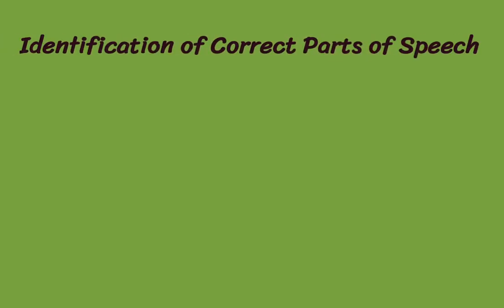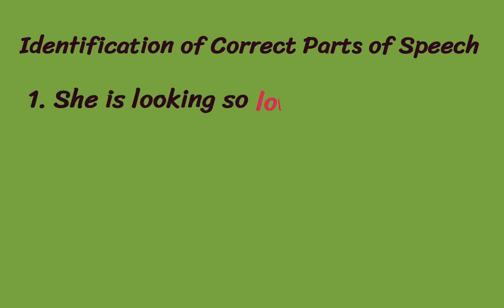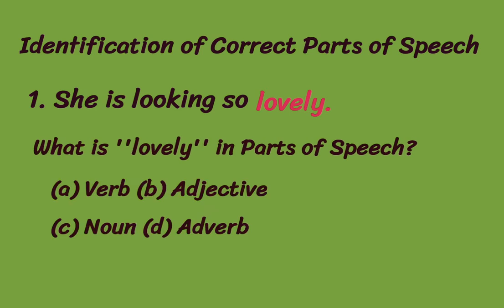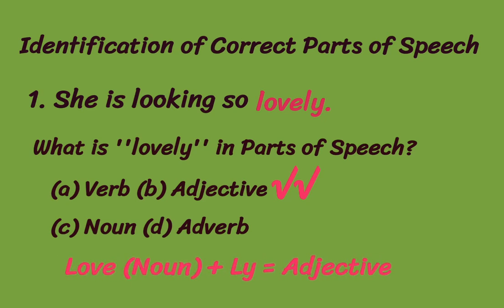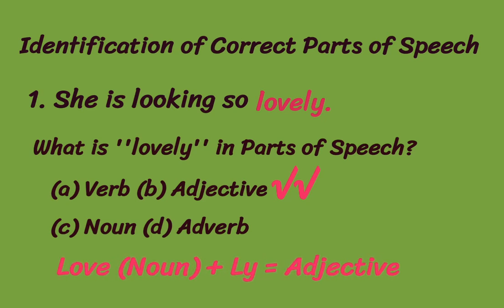Now we will look at the second section: identification of correct parts of speech. In this section, a word will be highlighted in the sentence and you have to find the part of speech of that word. In the sentence 'She is looking so lovely,' the word highlighted in pink — 'lovely' — is an adjective. So option B is correct. Lovely is the adjective of the noun 'love'; when we add -LY to 'love,' it becomes 'lovely.'